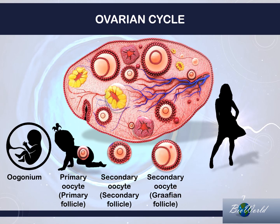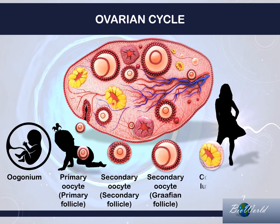The secondary follicle then begins to expand and grow, becoming what is known as a Graafian follicle. Inside the Graafian follicle, the secondary oocyte is still present. Once the Graafian follicle has reached its maximum size, it will rupture, releasing the secondary oocyte into the fallopian tube.